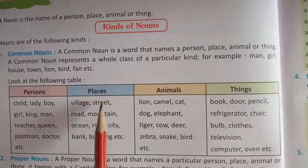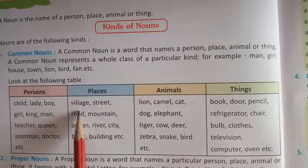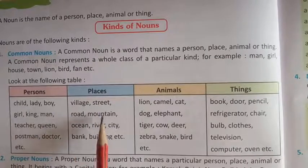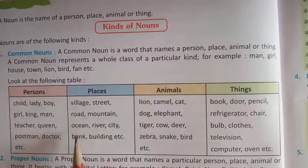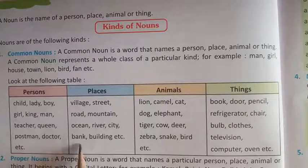Next is places. For example: village, street, road, mountain, ocean, river, city, bank, building, etc.